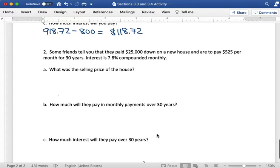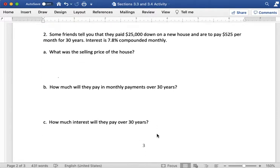Question two. Some friends tell you that they paid $25,000 down on a new house and are to pay $525 per month for 30 years on their mortgage. Interest is 7.8% compounded monthly. What was the selling price of the house?